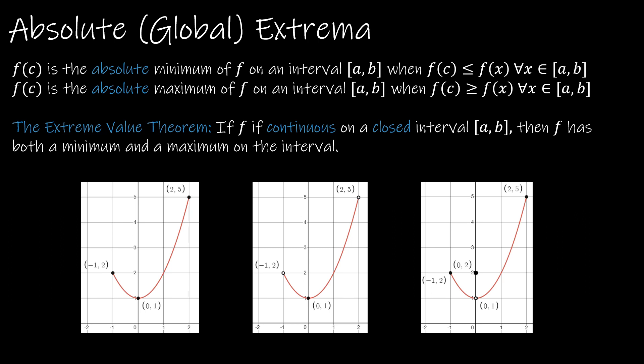We're going to start by looking at absolute extrema. Some textbooks call it global extrema, but we're going to stick with absolute. So f(c) is the absolute minimum of f on an interval, which is closed, a closed interval [a, b], when f(c) is less than f(x) for all x's in the interval. So a couple of things to point out, f(c) is referring to the y value, and it's the absolute minimum on a closed interval when f(c) is less than or equal to f(x).